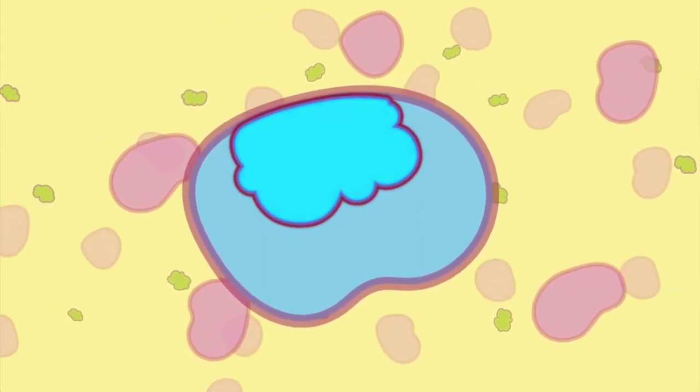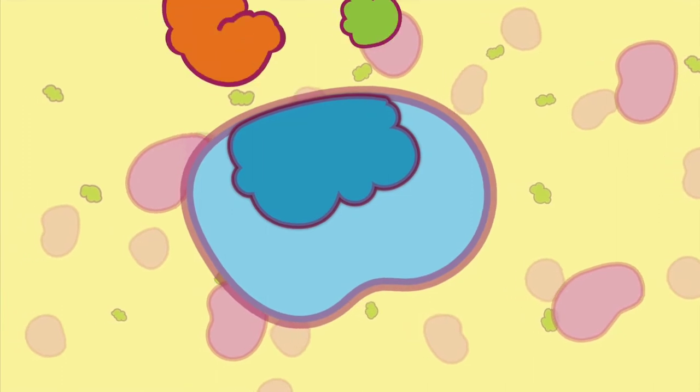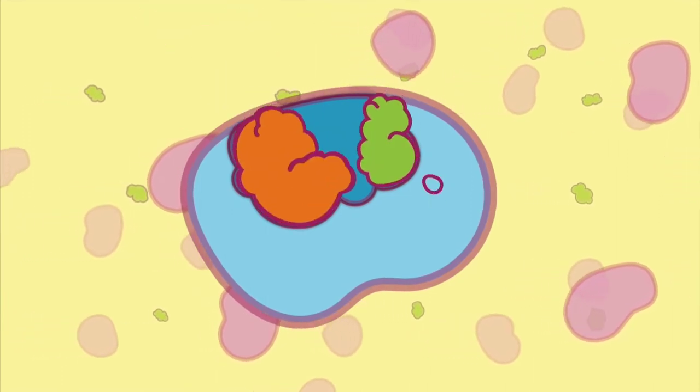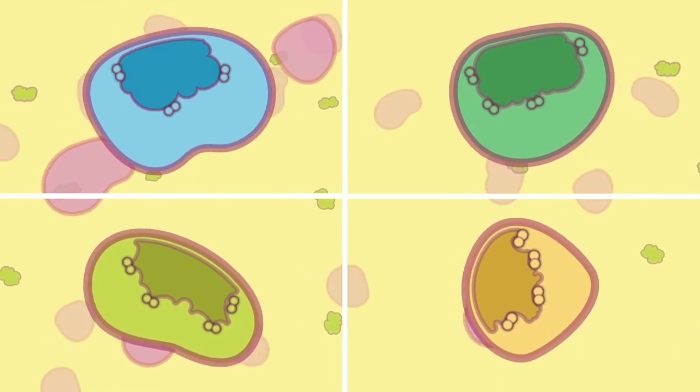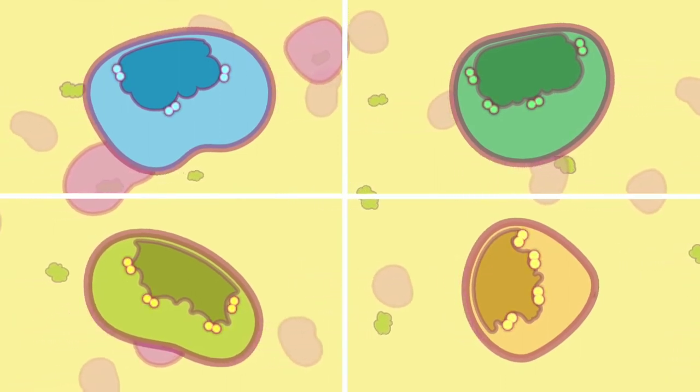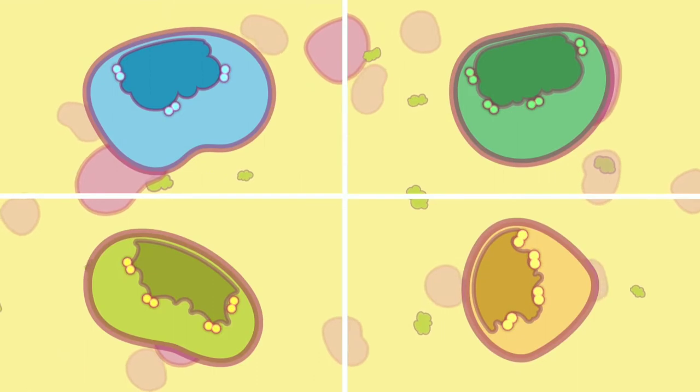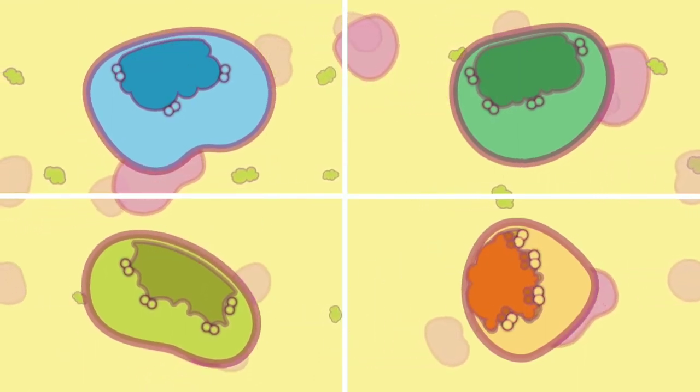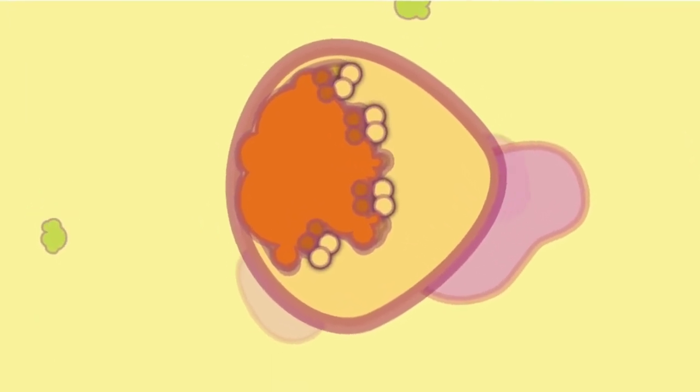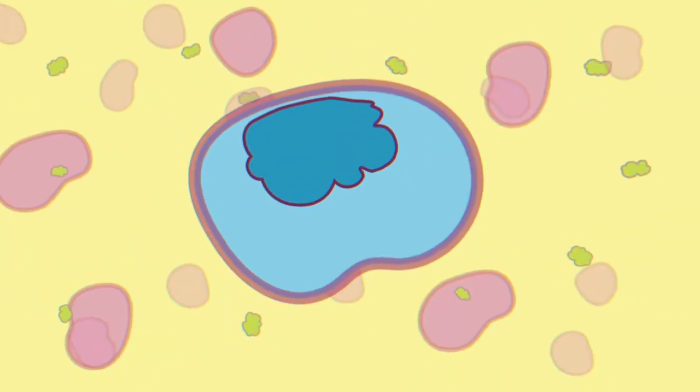Enzymes have a specific place in them called active site, where the substrate binds and real-time action takes place. Active site has a specific size, shape, and chemical behavior rendered to it by specific arrangement of amino acids. Thanks to these amino acids, an enzyme's active site is unique only to a particular substrate.